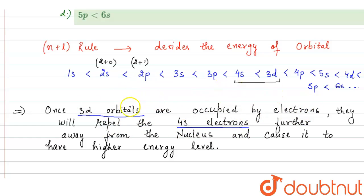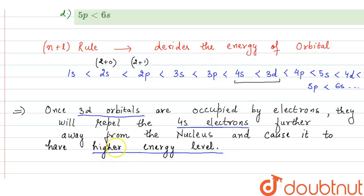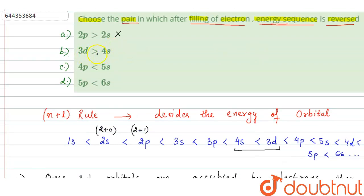Before the occupation of electrons, 3D and 4S orbitals have only a slight energy difference — they have approximately equal energy, with 4S having slightly less energy. After filling of electrons in 3D orbitals, the 3D electrons repel the 4S electrons further away from the nucleus. That is why the energy of 4S becomes greater, and the energy order is reversed.